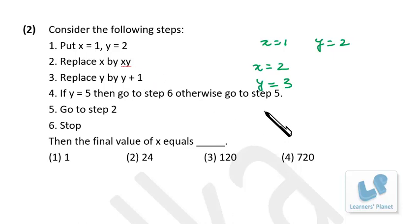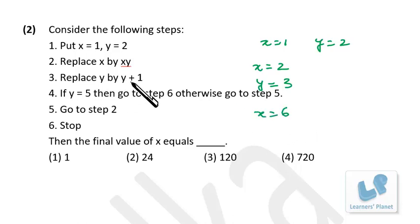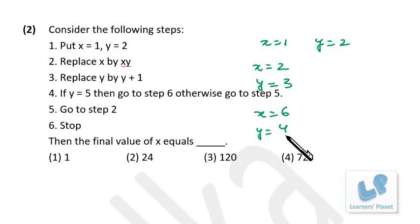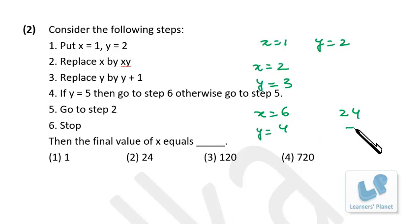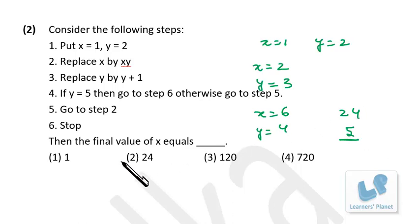Continuing: X = 2, Y = 3, so new X = 6. Replace Y by Y + 1: Y = 4 — not yet 5, so go back to step 2. Now X = 6 × 4 = 24, Y = 5. When Y = 5, X = 24. That's pretty simple.